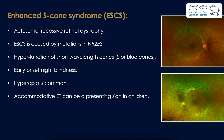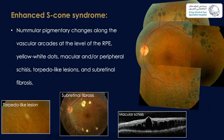Enhanced S-cone syndrome, more common in Saudi Arabia, is an autosomal recessive retinal dystrophy caused by mutations in NR2E3, characterized by hyperfunction of short-wavelength or blue cones. Patients usually have early-onset nyctalopia and hyperopia; accommodative esotropia can be a presenting sign in children. The fundus shows deep pigmentary lesions around the vascular arcades at the RPE level, yellow-white dots usually inferonasal to the disc, macular and peripheral retinoschisis, torpedo-like lesions, and different patterns of subretinal fibrosis.